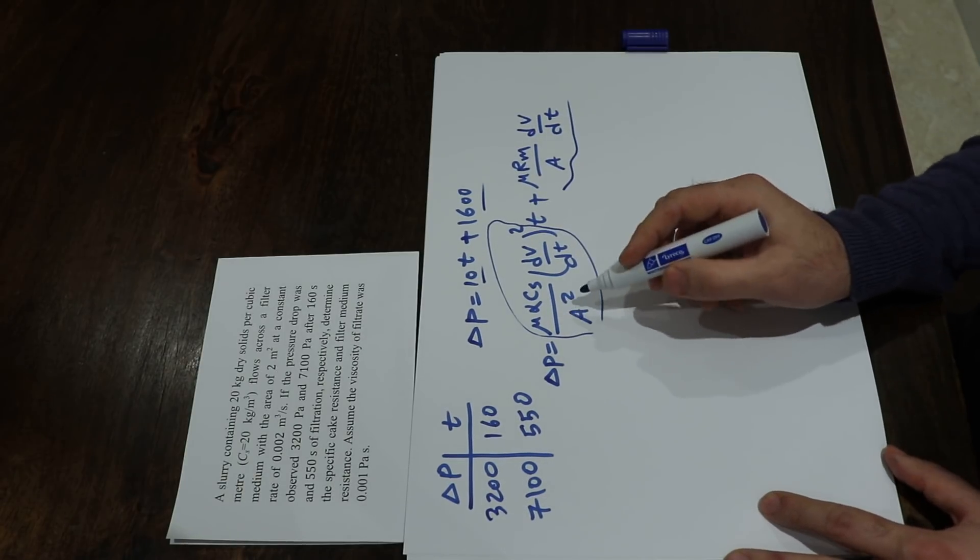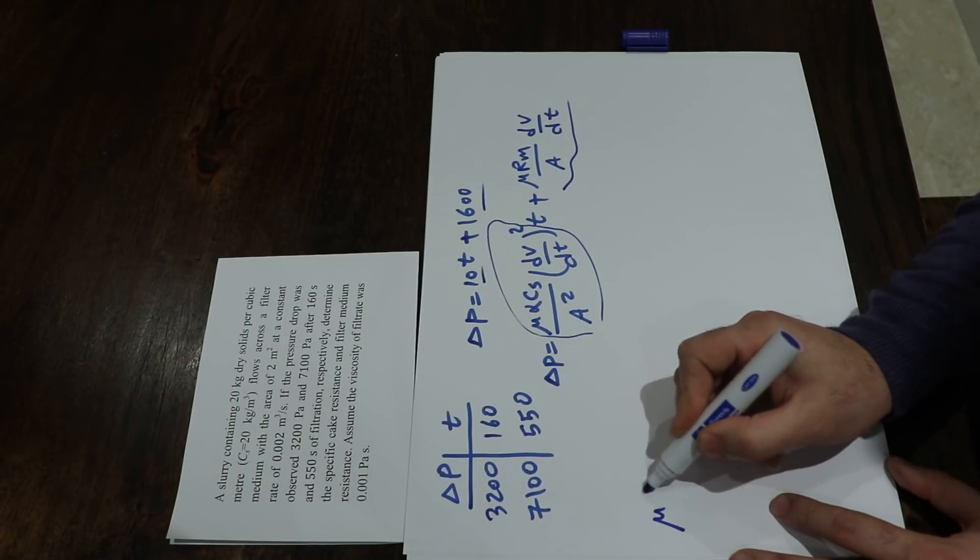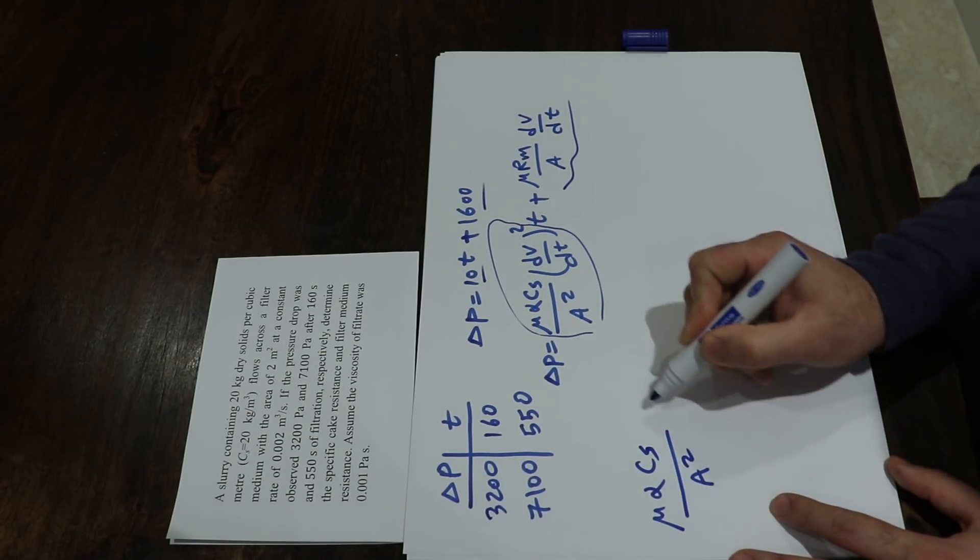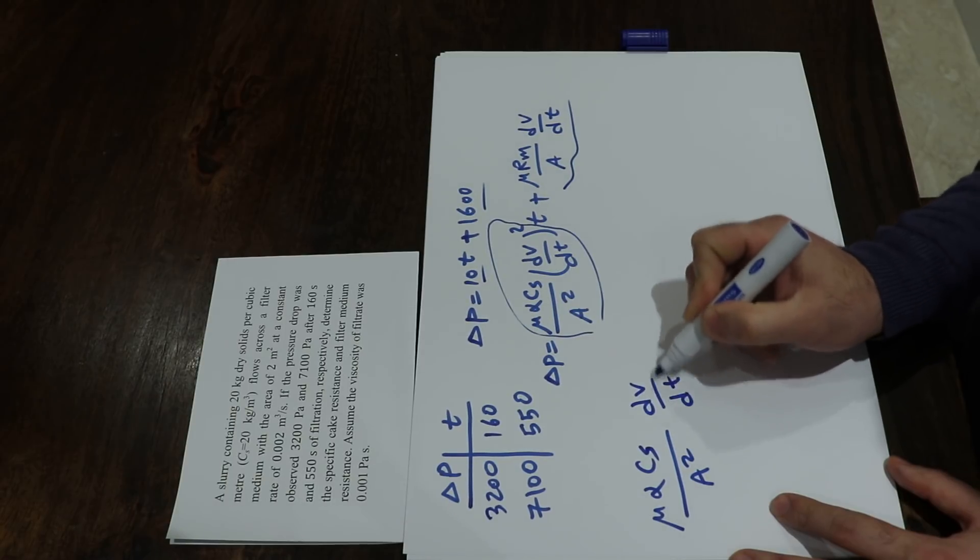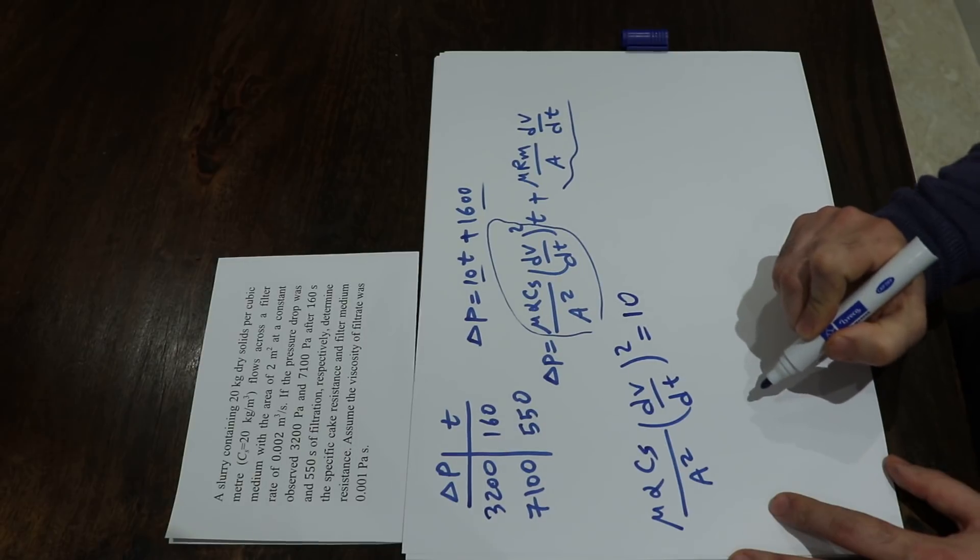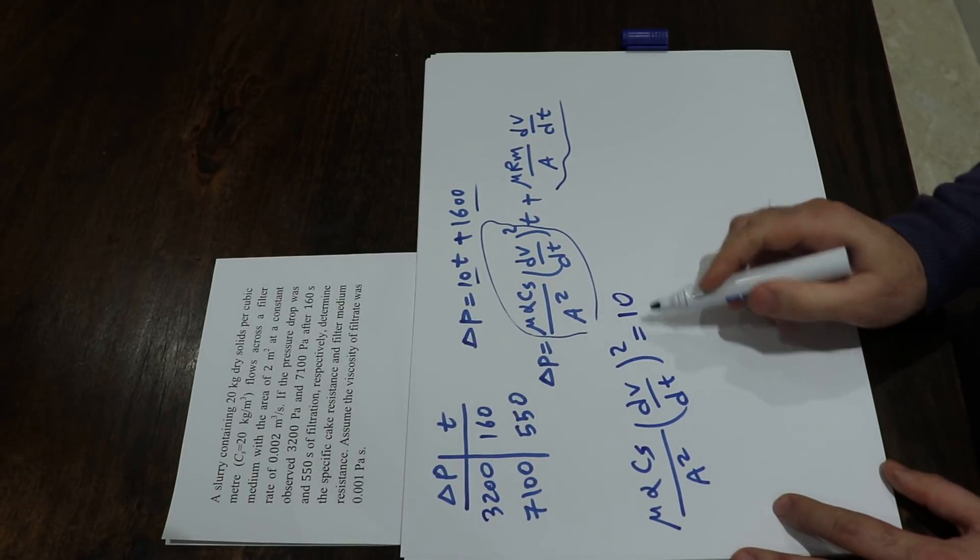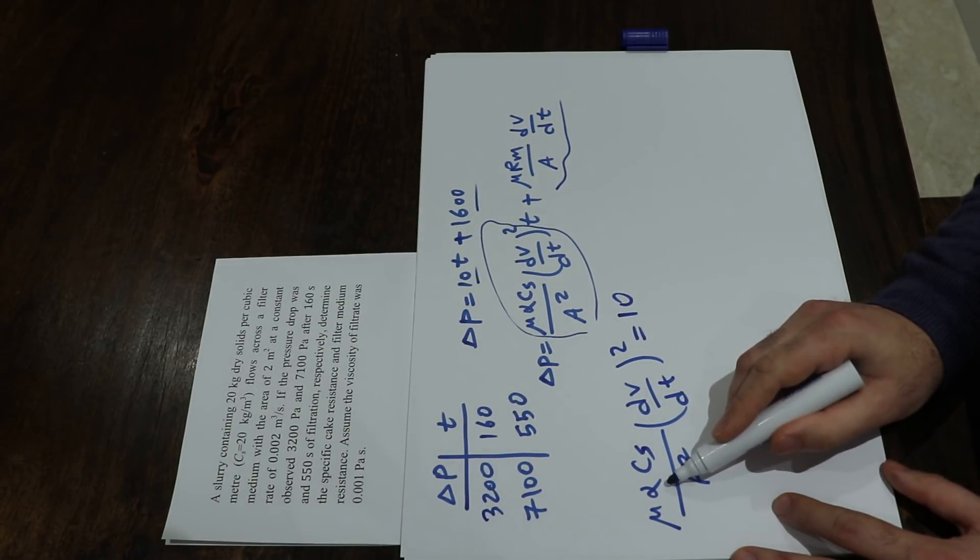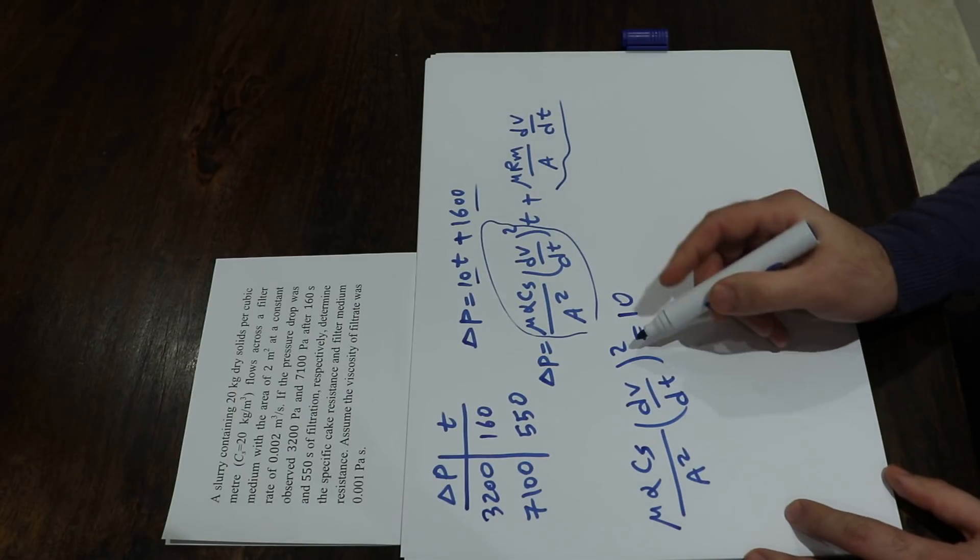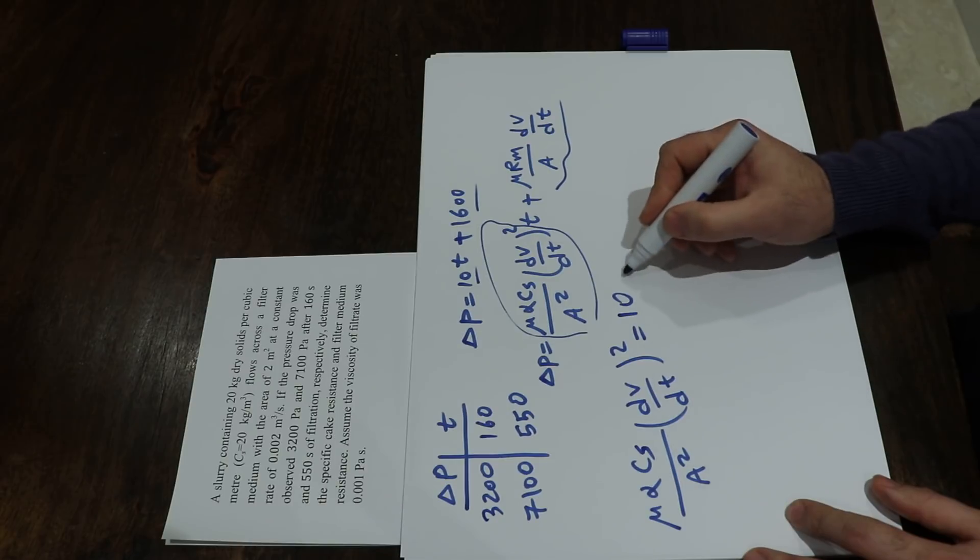In other words, mu alpha Cs divided by A squared times dv over dt to the power of 2 should be equal to 10. So here you have all the parameters except alpha, because you have mu, you have Cs, you have A, and you have the rate. So if you substitute these values into this equation,